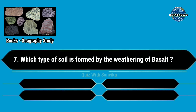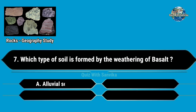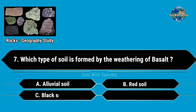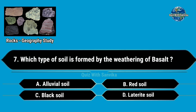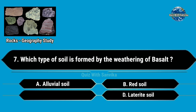Which type of soil is formed by the weathering of basalt? Options are A. Alluvial soils, B. Red soil, C. Black soil, and D. Laterite soil. Answer is C. Black soil.